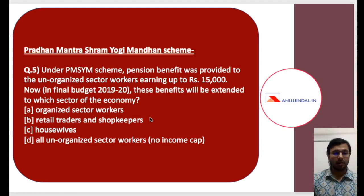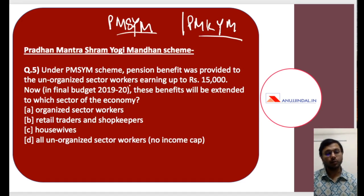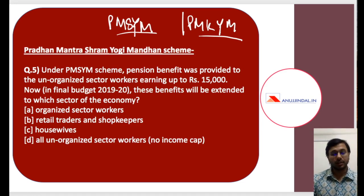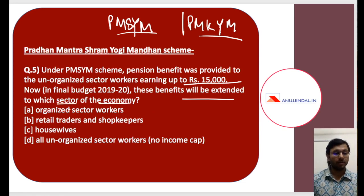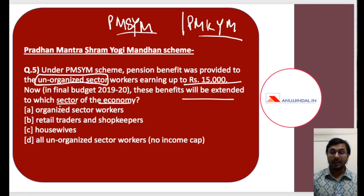The fifth question concerns Pradhan Mantri Shram Yogi Mandhan as well as Pradhan Mantri Karam Yogi Mandhan — a very important area. Under Pradhan Mantri Shram Yogi Mandhan, pension benefit is provided to unorganized sector workers earning up to Rs 15,000 per month. These benefits will be extended to which sector of the economy also? There was some confusion here: when the interim budget was launched, both organized and unorganized sectors were mentioned, but this was corrected within three to four days to only unorganized. I want to clearly state that as of now it is only meant for the unorganized sector.